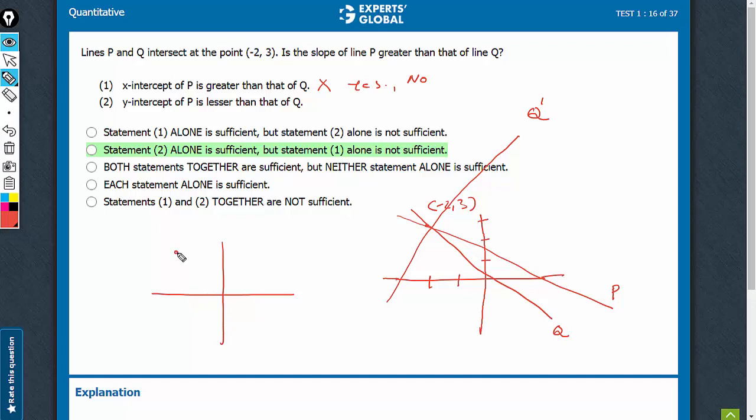This is a point. Statement 2: y-intercept of p is lesser than that of q. So let's draw two lines - this is one, this is another. Y-intercept of p is lesser, so this has a lesser slope. This should be p and therefore this is q. In this case, we have no as an answer because q is rising more sharply.